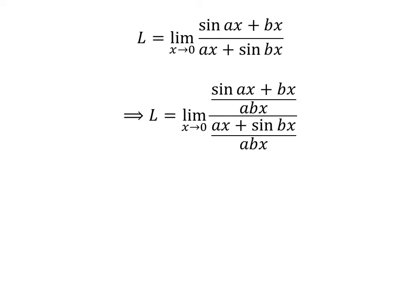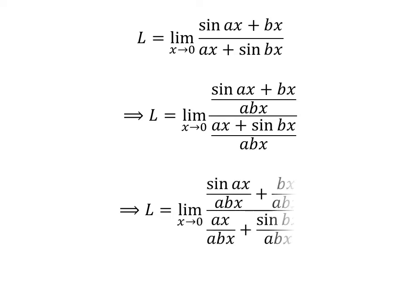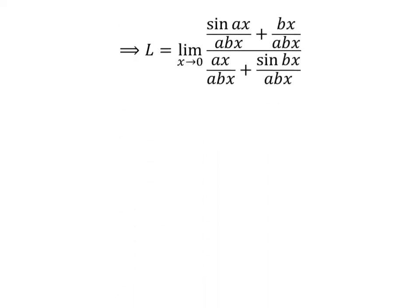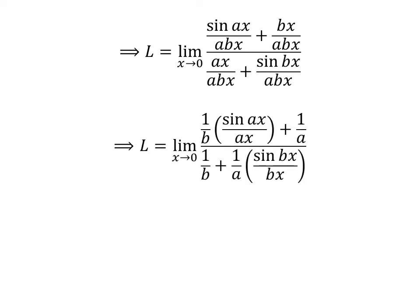As multiplying the numerator and the denominator of a fraction by a common factor does not change the value of the fraction, let us multiply the numerator and the denominator by 1 upon abx. We can then express the fractions in the numerator and denominator as a sum of two fractions, and cancelling out the common factors gives us the simplified limit.